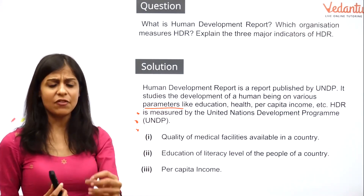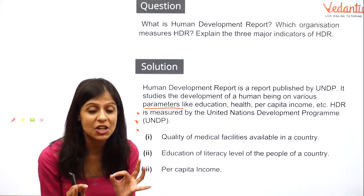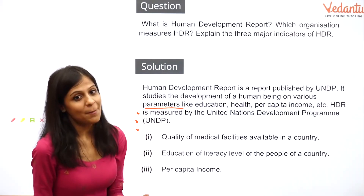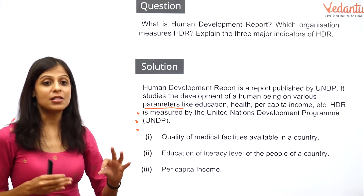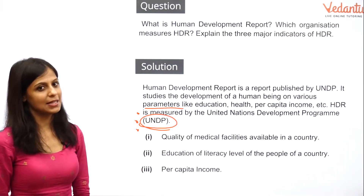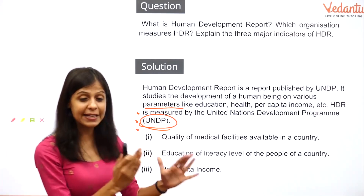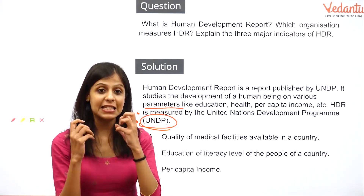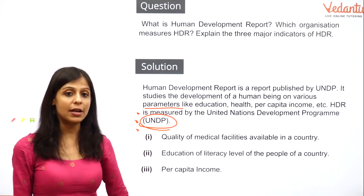The second part of the question asks which organization measures the Human Development Report. Don't just write 'UNDP' — make sure to give its full form: United Nations Development Programme is the authority responsible for releasing this report.